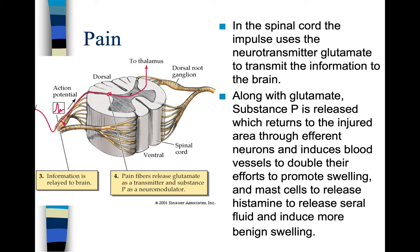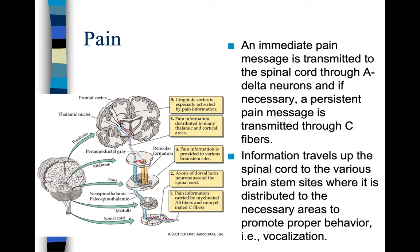When you sprain your ankle or wrist, it swells up — it's almost like a self-induced cast. An immediate pain message is transmitted to the spinal cord through A-delta neurons, and if necessary a persistent pain message is transmitted through C-fibers. Information travels up the spinal cord to various brainstem sites where it is distributed to promote proper behavior such as vocalization — that's the 'ouch.' These things actually make the pain less severe by vocalizing, because it sends endorphins into your brain to block the pain.